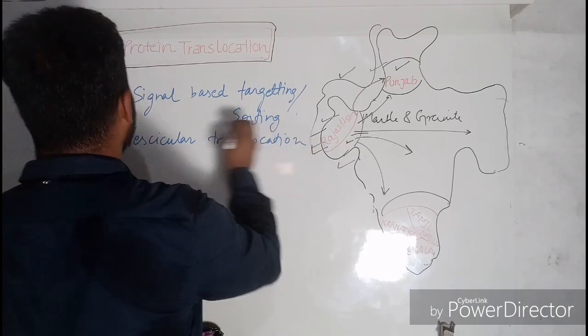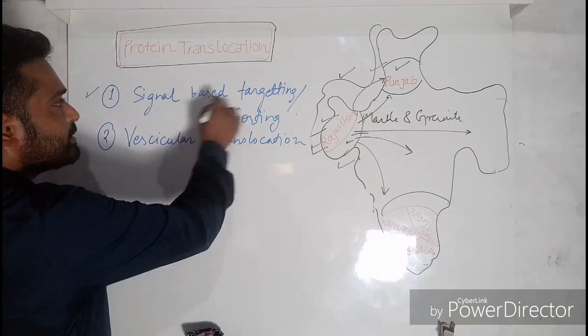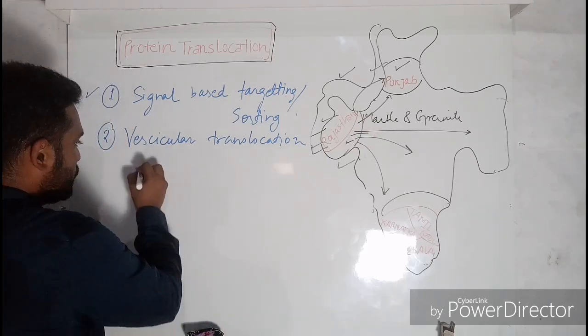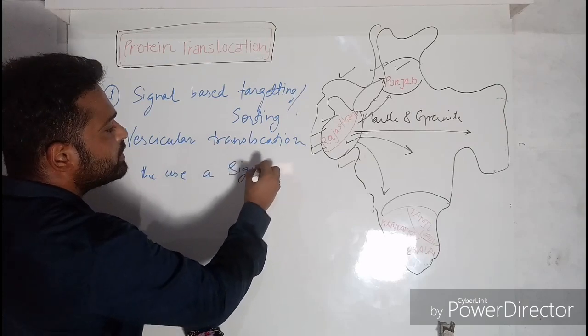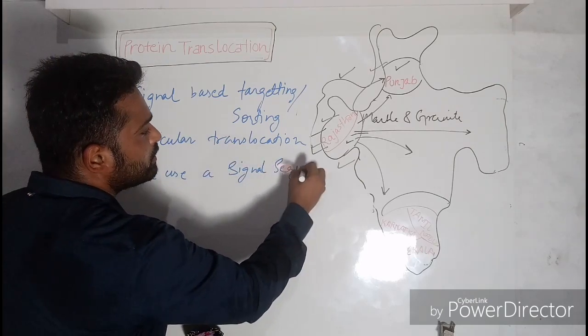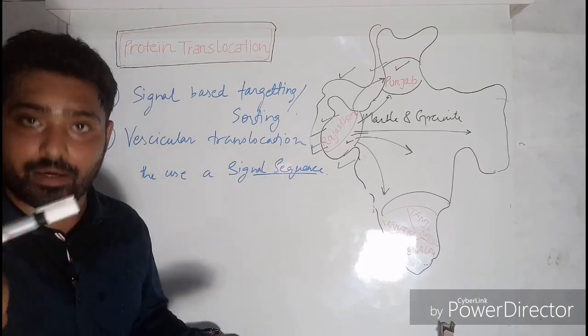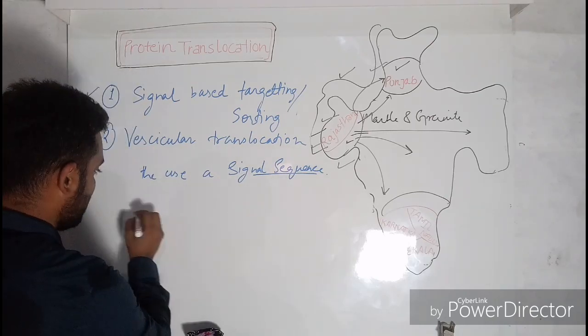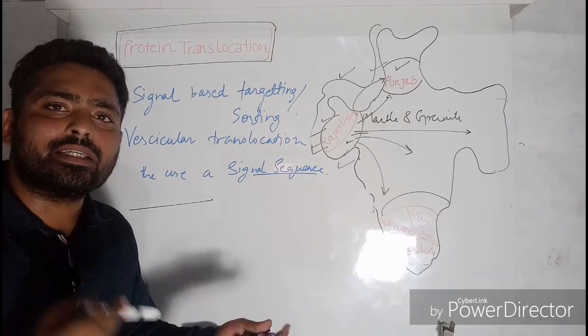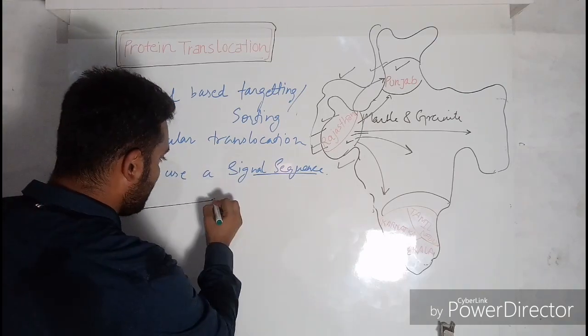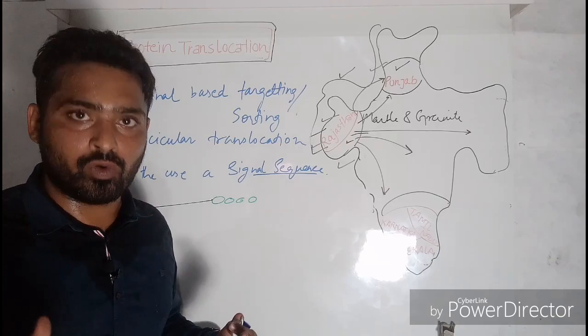We first talk about the signal-based targeting. In simple terms, this method involves the use of a signal sequence. Now what is this signal sequence? Suppose we have a protein which is synthesized on the ER. So this is that protein. In this protein there is a signal sequence, like here, this signal sequence is nothing but a stretch of amino acid